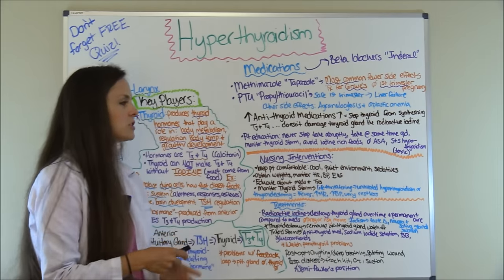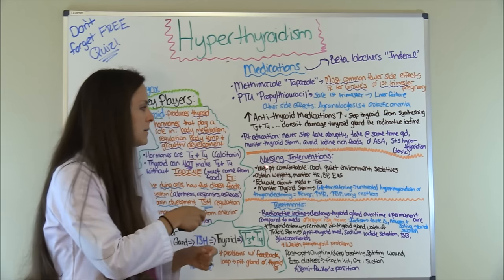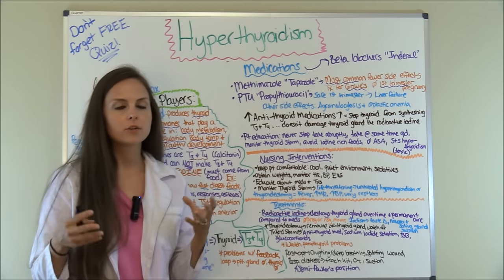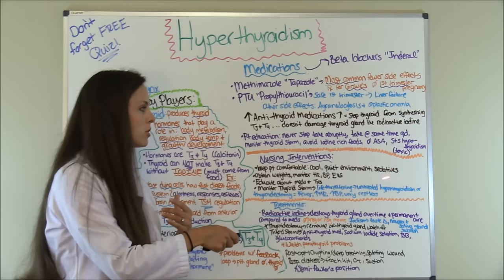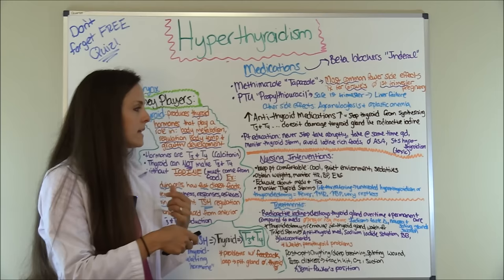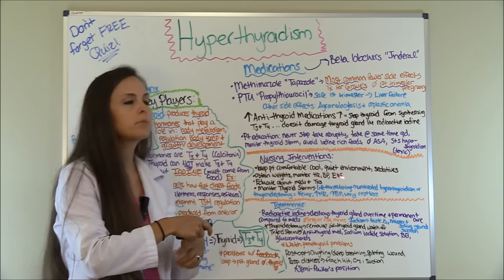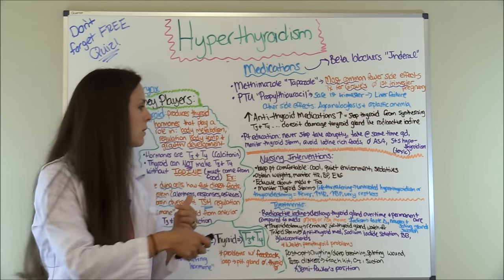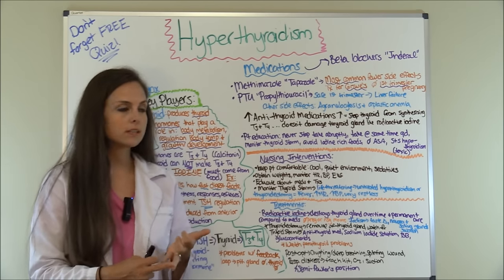Now let's look at nursing interventions. You want to keep the patient comfortable, because they're having issues with heat intolerance and are very stimulated and restless, so keep the environment cool and quiet. Administer sedatives if the doctor orders them as needed to keep them calm. Obtain and monitor their weight to make sure they're getting proper nutrition, since they're burning calories so fast. Monitor heart rate, blood pressure, and EKG for any changes, making sure their heart rate isn't tachycardic or blood pressure too high.